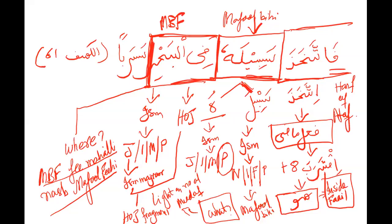Shall I delete the last part so I can write the next? Yes. A student asks: is it right that Ittakhada and Jaala always have two Mafools? Yes. And also Aata — Aata, yes. Because I said it's not always — they can have two. A student asks: Jaala can have two Mafool Bihi? Yes. It can have two Mafool Bihi. Jaala can have, Ittakhaza can have, and Aata can have.